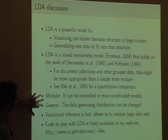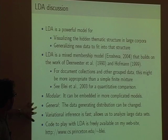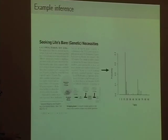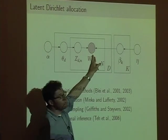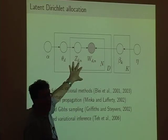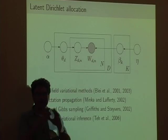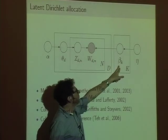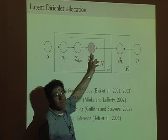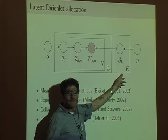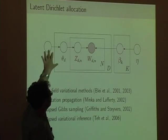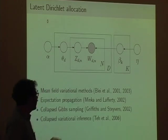Casting this in a graphical model setting means the models are modular — we can embed them in more complicated models, which is what we'll do next. There's also generality: the data generating distribution can be changed. People have used exactly this model to model pixels grouped in images instead of words in documents, generating pixels from different color histogram topics. This data generating distribution can be changed to whatever you like, and the underlying inference algorithms remain the same.